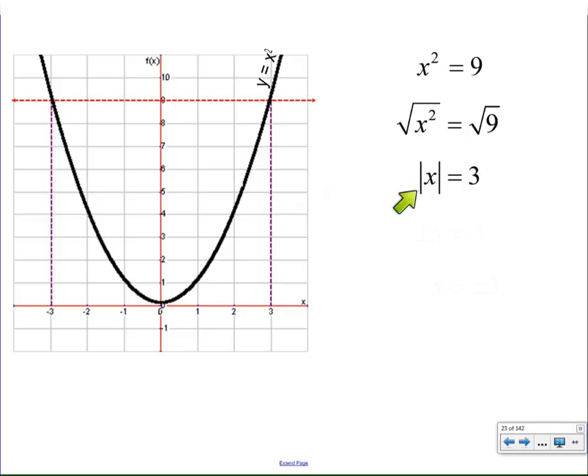We actually now have the absolute value of x equals 3. So essentially what we have to do is account for the fact that x could be negative or positive, and we do so by defining the square root of x squared as the absolute value of x.